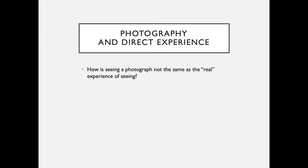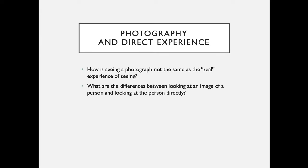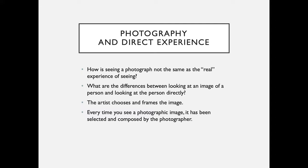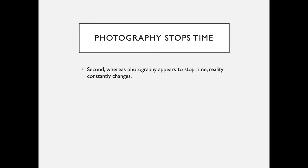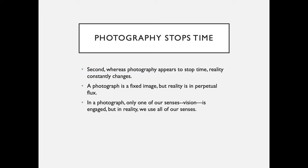How is seeing a photograph not the same as the real experience of seeing? What are the differences between looking at an image of a person and looking at the person directly? The artist chooses and frames the image — every time you see a photographic image, it has been selected and composed by the photographer; if you were there, you would see something different. Second, whereas photography appears to stop time, reality constantly changes. A photograph is a fixed image, but reality is in perpetual flux. In a photograph, only one of our senses — vision — is engaged, but in reality we use all of our senses: you would hear things, touch things, and smell things.